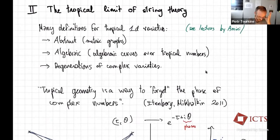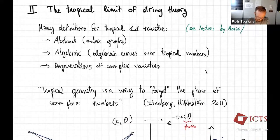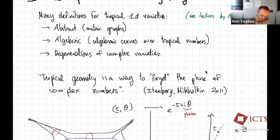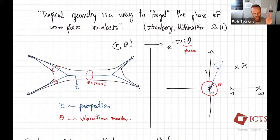Now let me say more precise things about the tropical limit of string theory and tropical graphs. There are many different definitions for what would be tropical 1D varieties: abstract metric graphs, algebraic curves over tropical numbers, and limits of complex curves. There is a nice phrase from a paper by Itenberg, Brugallé, and Mikhalkin characterizing tropical geometry as 'a way to forget about the phases of complex numbers.'